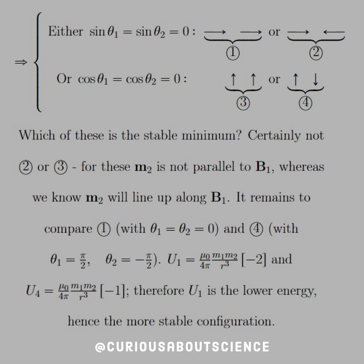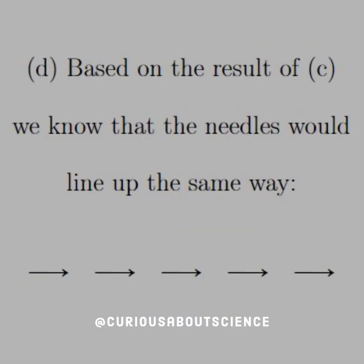Therefore, the lower energy is accompanied by case 1, because you have negative 2, which lowers it even more than negative 1, and hence the most stable configuration. Again, if they're in line with the field, that makes sense.